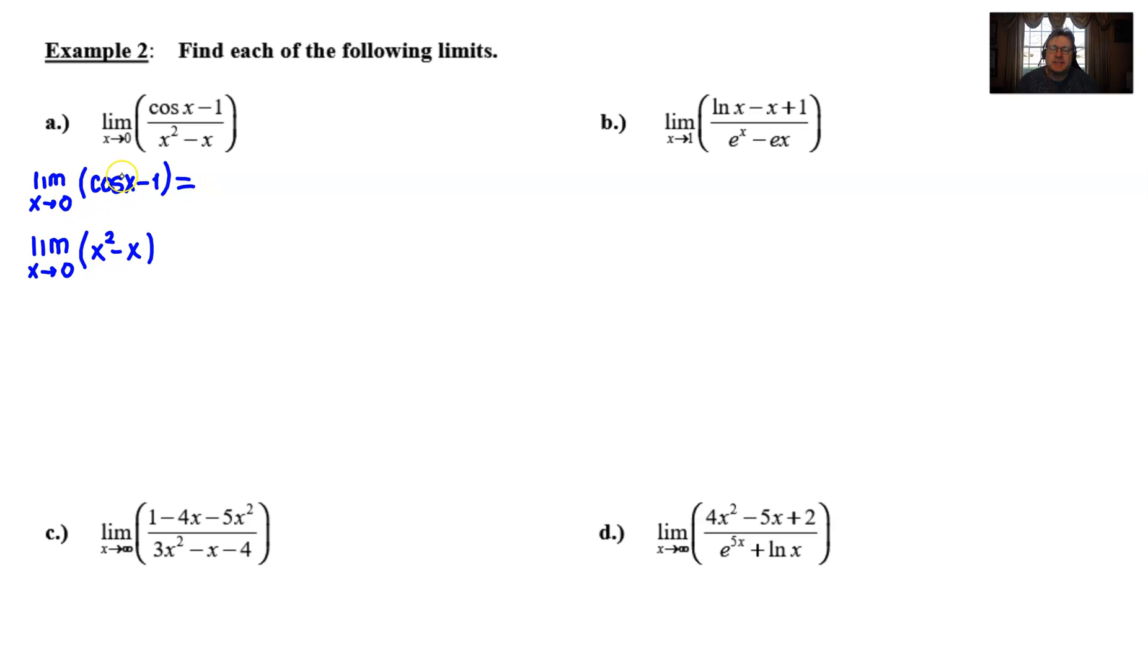In this particular case, because the limit of the top, cos(0) which is 1 minus 1 is 0, and the bottom is 0, we have to have those separate so that we can say that L'Hopital's Rule applies. By L'Hopital's Rule, you can also abbreviate it and spell it either of its two possible ways. Then you go about taking the derivative of the numerator.